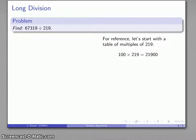Times 10, times 100, times 1,000—that's too big, so I don't need to go that far. I'll just do times 100 and see if I can get closer to my target number, 67,319.